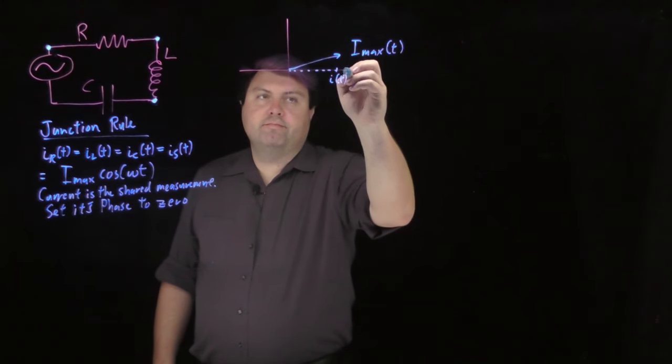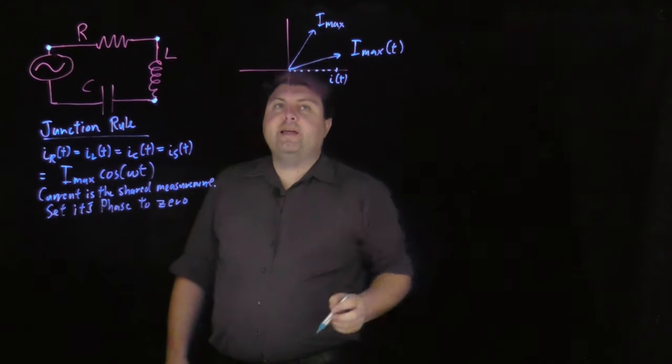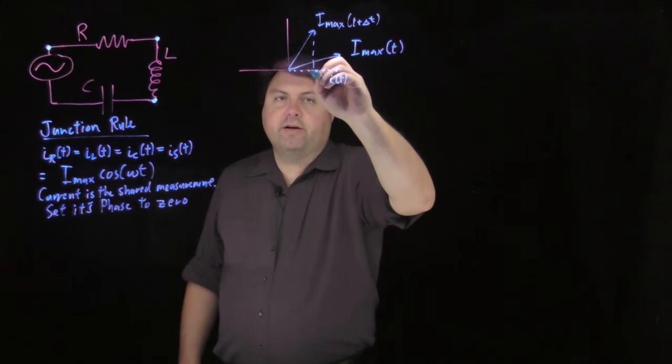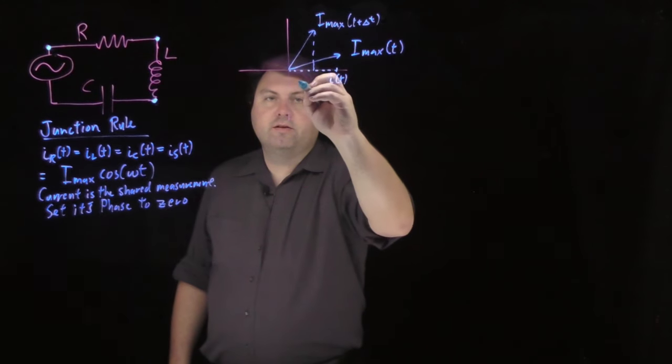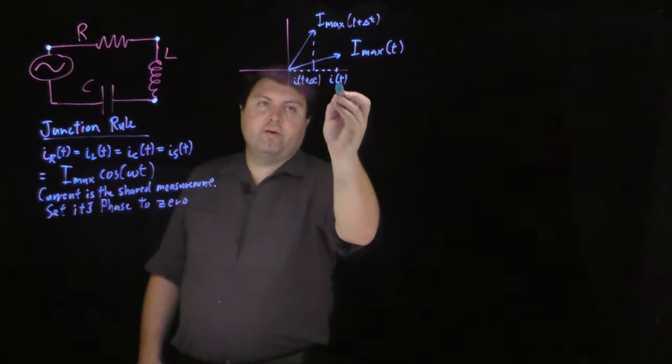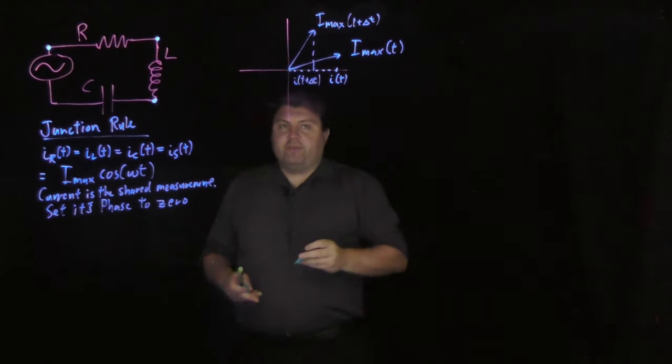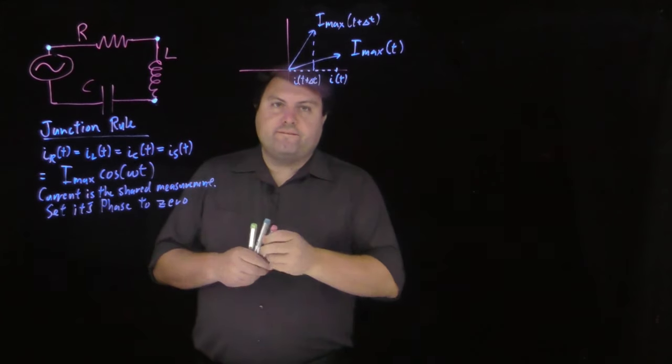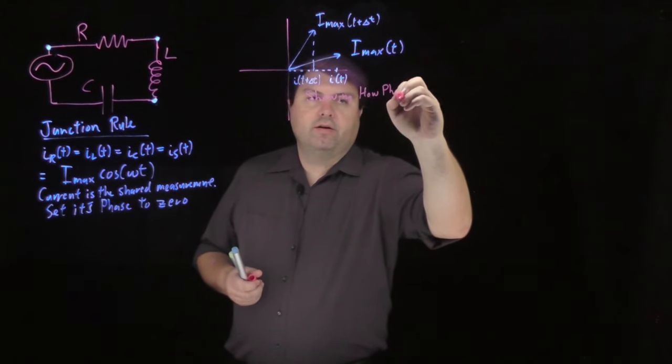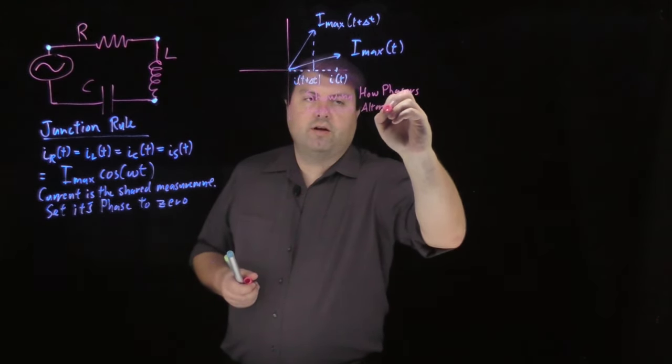At a later time, we will still have the same length of this vector I_max. So this is some t plus delta t. Then the current being the cosine of this angle will have evolved a bit. And so then we can show that the current oscillates, or alternates if you will, between these values. So if we have that, this is showing how phasors represent alternating current.